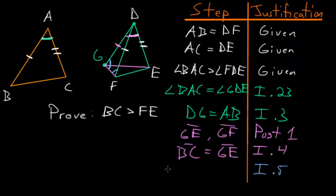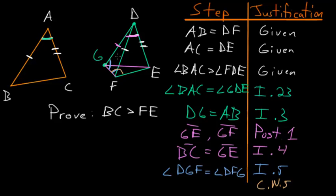We can write that angle DGF equals angle DFG. Notice that angle DFG is smaller than angle EFG, since the whole is always greater than the part — so by Common Notion 5, EFG is bigger than DFG. But since DFG equals DGF, we can write that angle EFG is bigger than angle DGF.